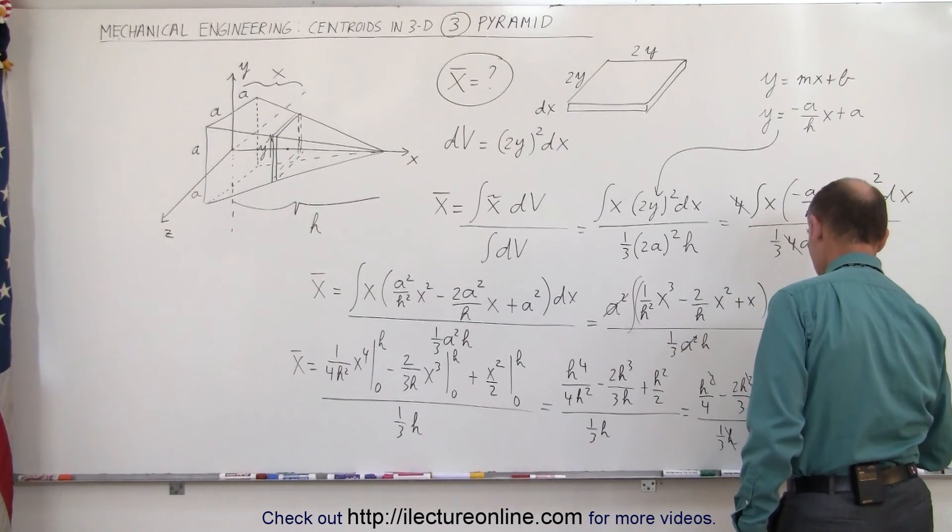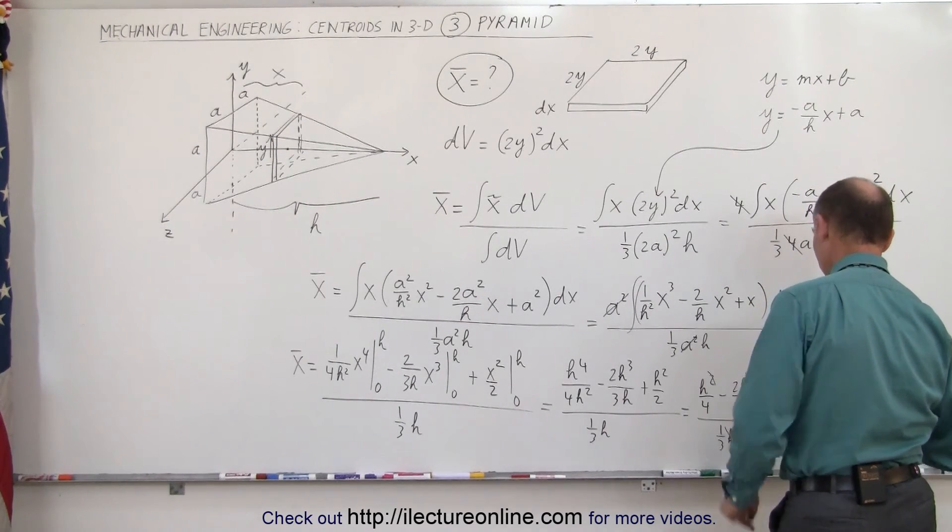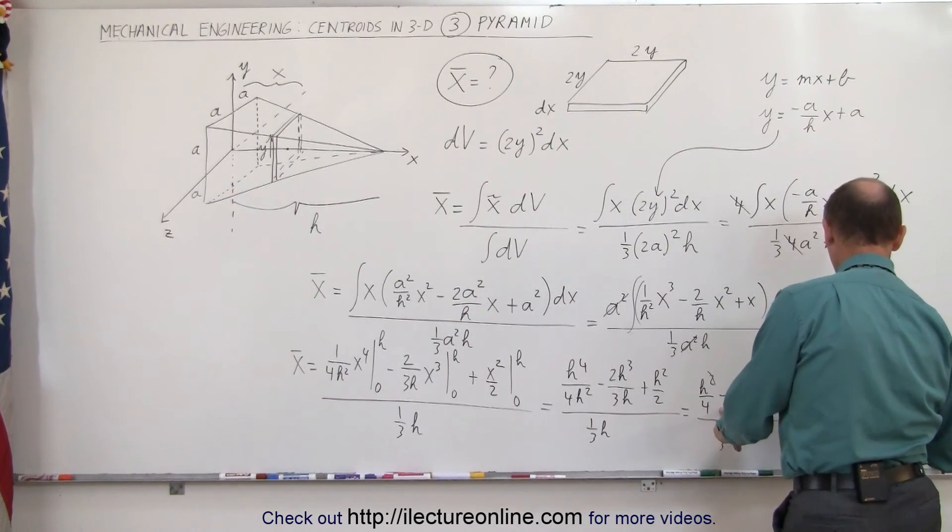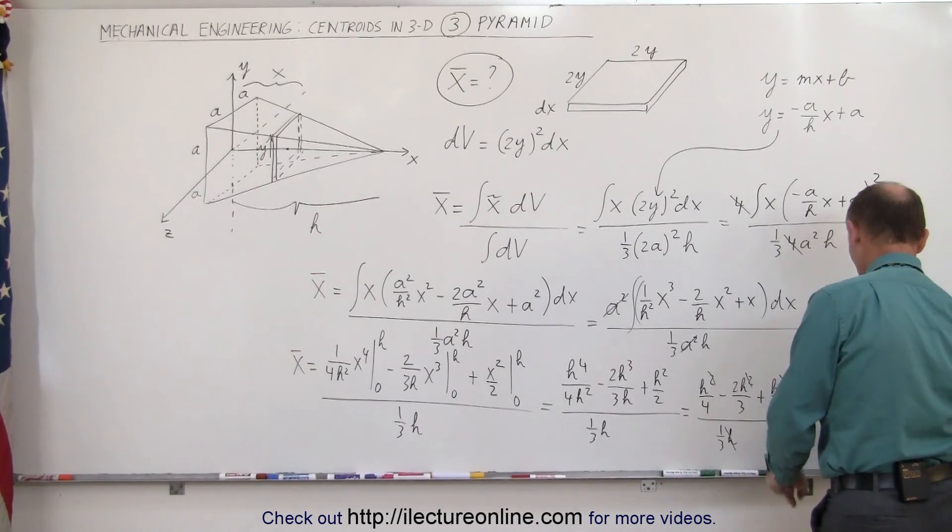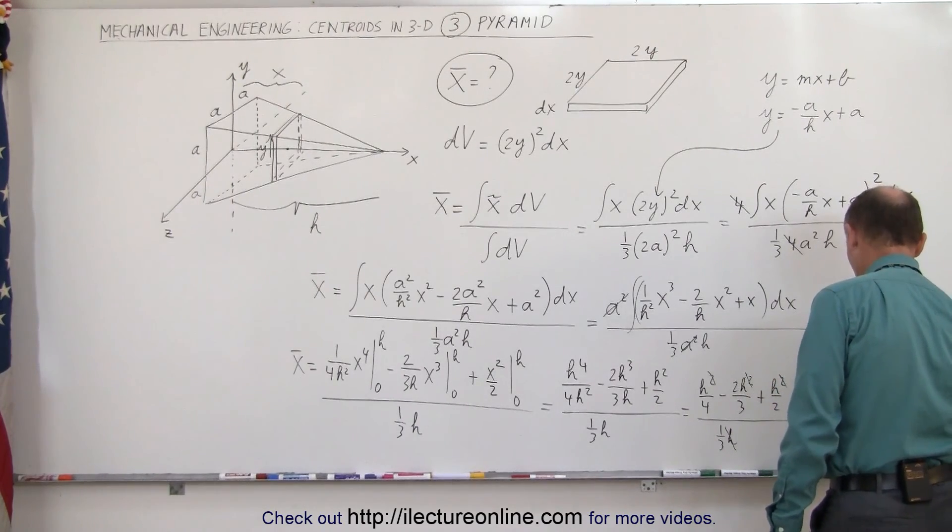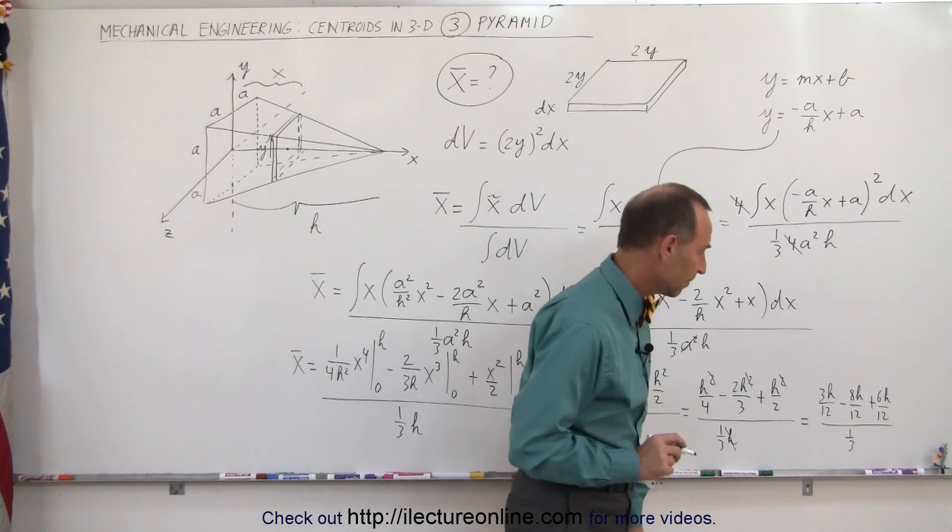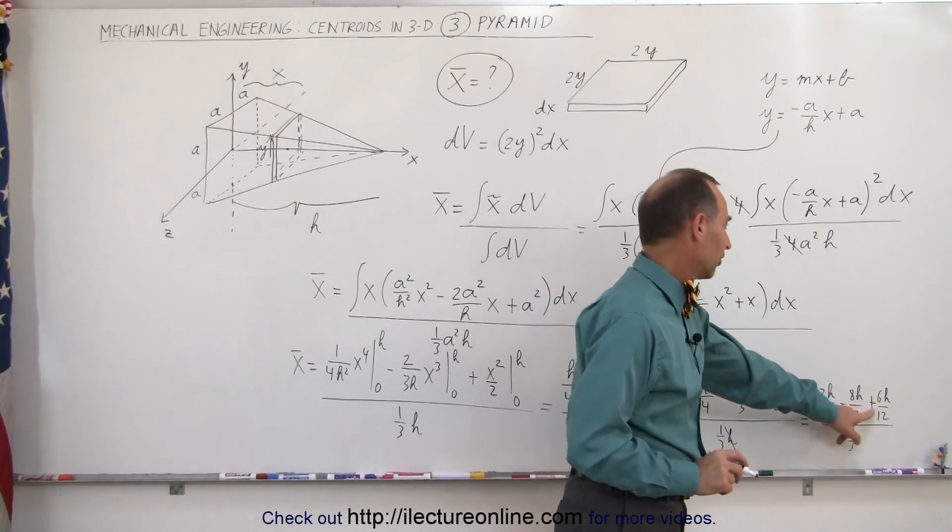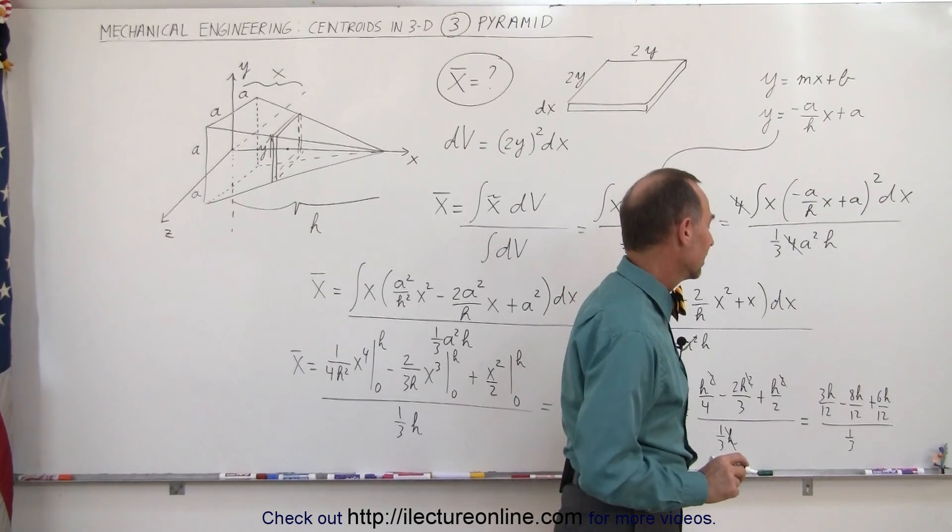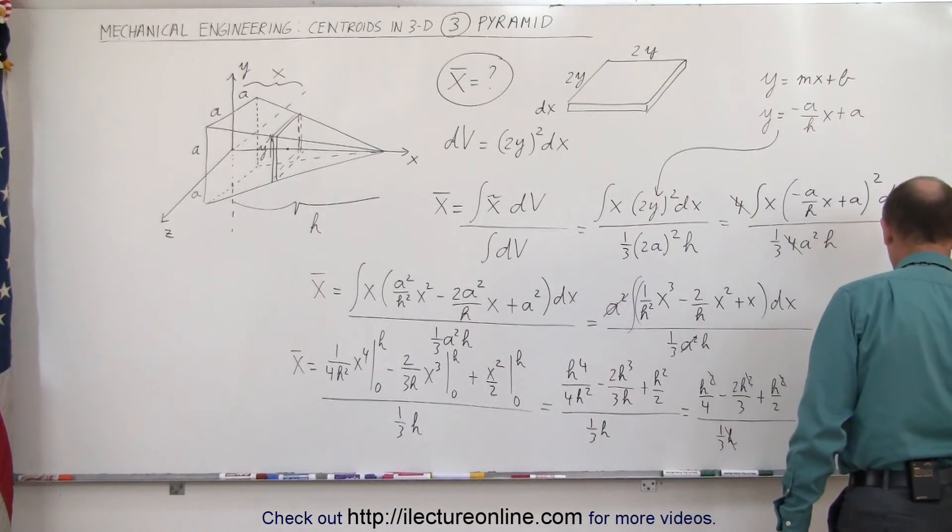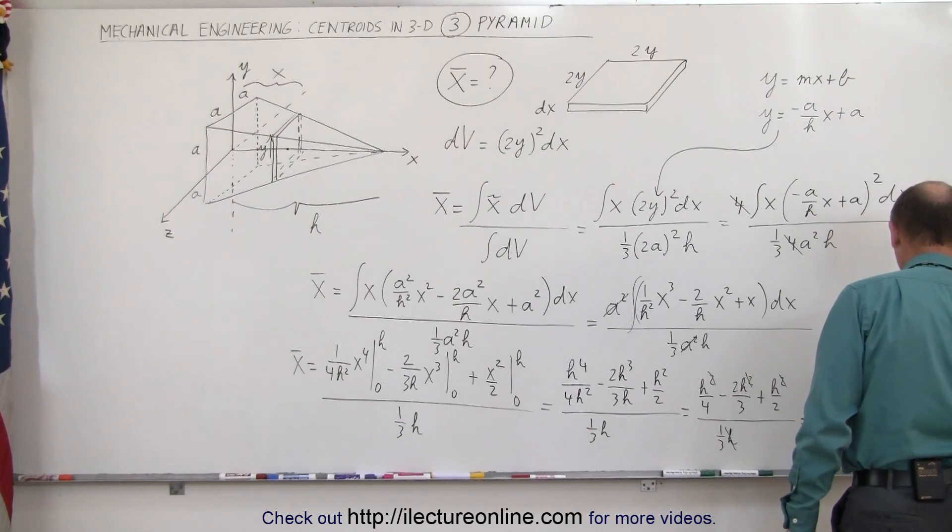Common denominator is 12, which means we have 3 h over 12 minus 8 h over 12 plus 6 h over 12, the whole thing divided by one-third, which is the same as multiplying times 3. 3 plus 6 is 9 minus 8 is 1, so that gives us 1 h over 12 divided by one-third.